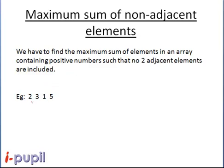So say we are given this array. We have to find the maximum sum of the elements of the array such that no consecutive, that is adjacent, elements are included. In this case, the maximum sum will come from adding 3 and 5, as 3 and 5 aren't adjacent — it actually makes a lot of sense.